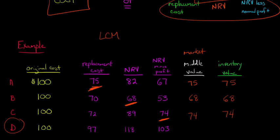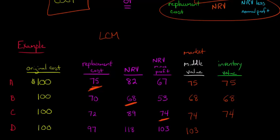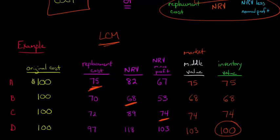Now with situation D, we have a replacement cost of 97, an NRV of 118, and an NRV minus profit of 103. We compare those and take the middle value, which is 103 — that's our market value. Now we compare this 103 to the cost of 100. In this case, the cost is lower, so the original cost is going to be our inventory value. Lower of cost or market — cost is lower, so our inventory value is $100, and we don't need any kind of write-down.